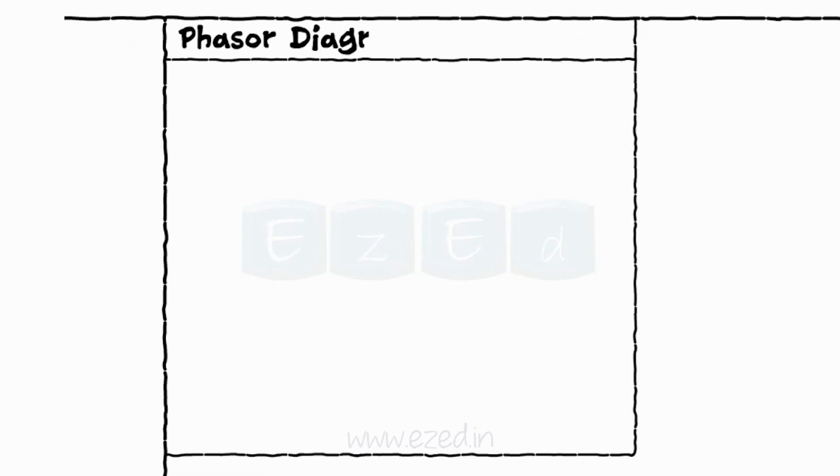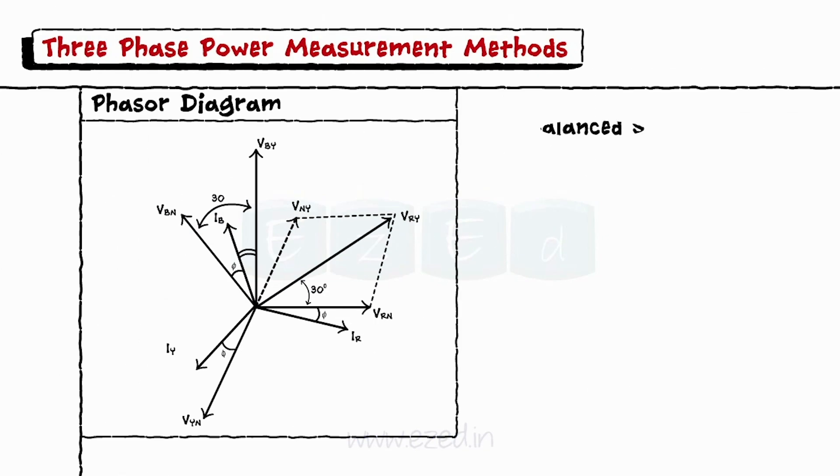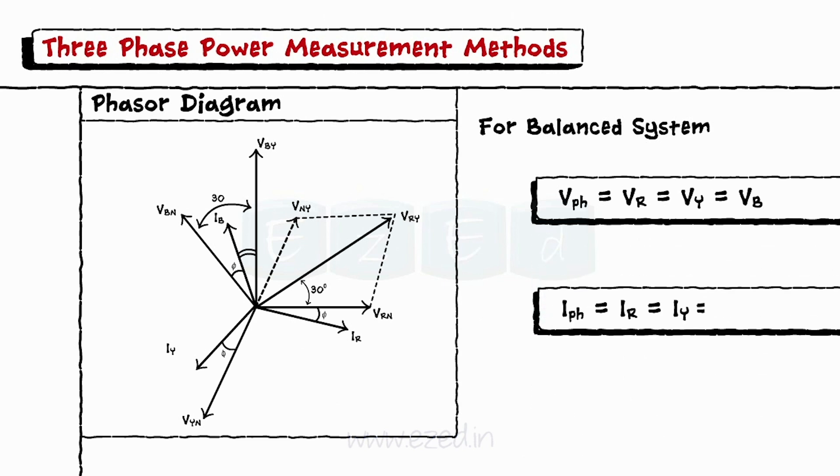Consider the phasor diagram for the star connected balanced three-phase system. As the system is balanced, the phase voltages and the phase currents are equal.